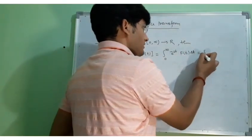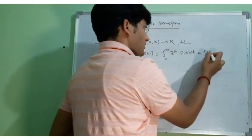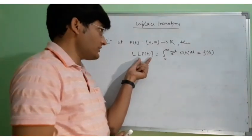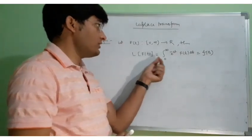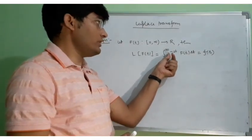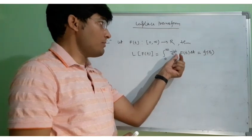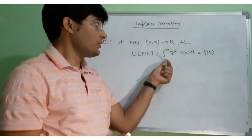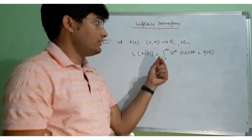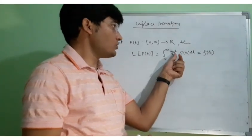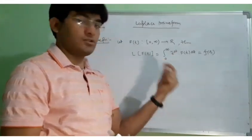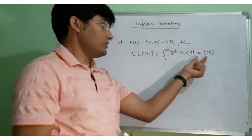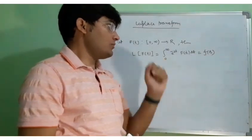We will denote this by some small function of S. So the Laplace of the function F(t) is equal to the integral from 0 to infinity of e to the power minus st times F(t) dt, where t is greater than or equal to 0. The output will be in terms of S, where S is a parameter which can be real or complex, and it is equal to F of S.